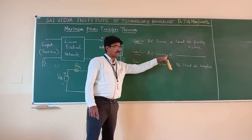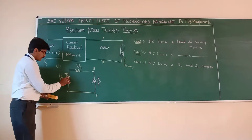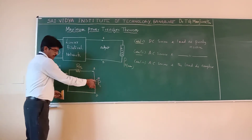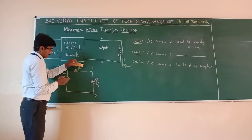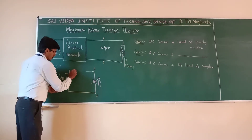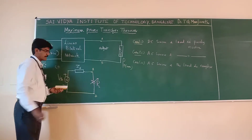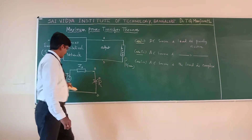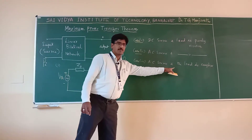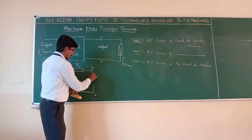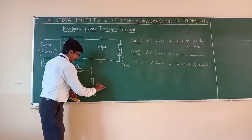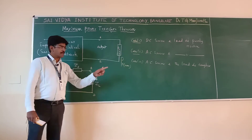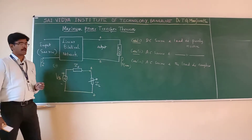Case 2: I will change the source to an AC source and keep the load the same — purely resistive. When taking an AC source, I will change the source resistance to source impedance Z_S and derive the condition of maximum power transfer. Case 3: I will keep the AC source the same and change the load to a complex load, represented as load impedance Z_L, which is the variable load. By considering these three cases, I will derive the condition for maximum power transfer.